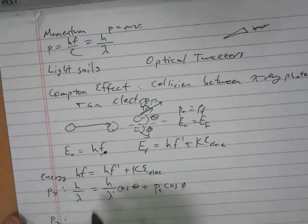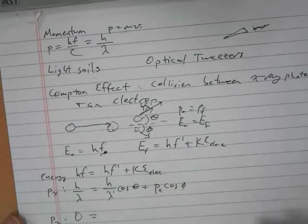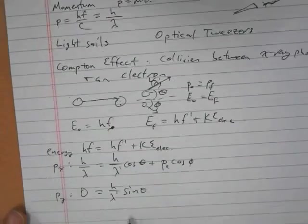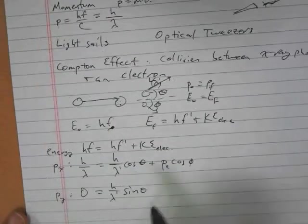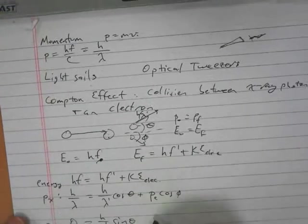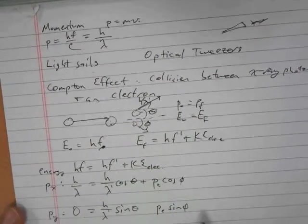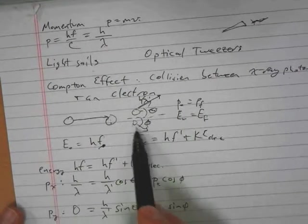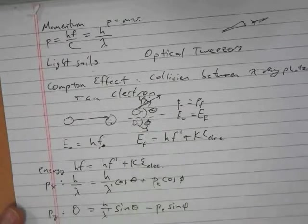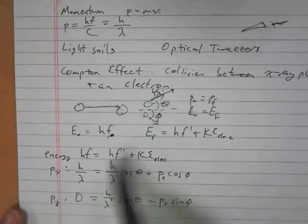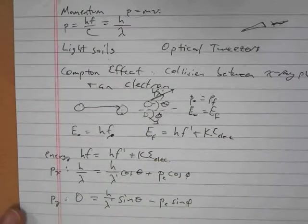In the y direction, there is initially no momentum. So we can say zero equals the y momentum of our x-ray, which is just h over lambda sine theta, and then the y momentum of the electron, which is that momentum sine phi. But as we've drawn this, this is going below the horizontal, so that's a minus. And so then these are our three equations that kind of govern the Compton effect, govern these collisions.